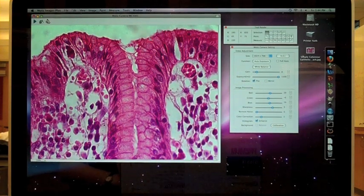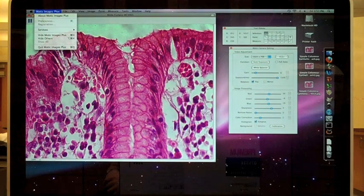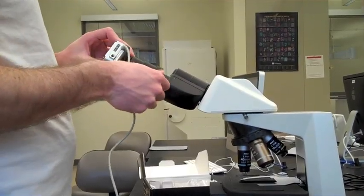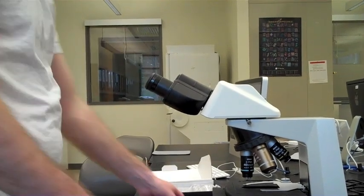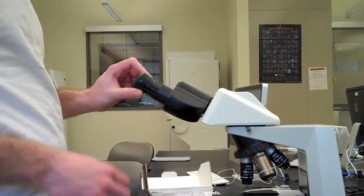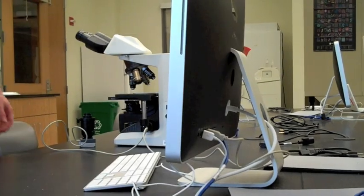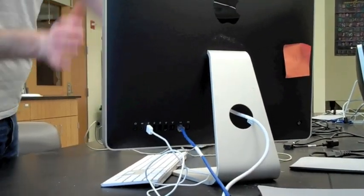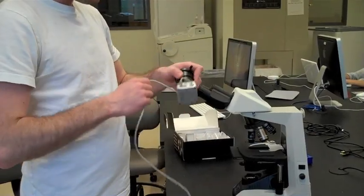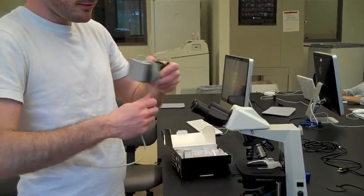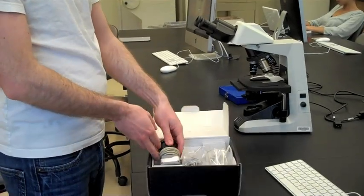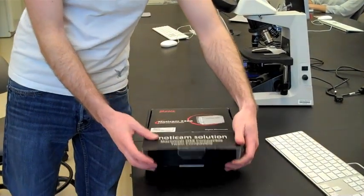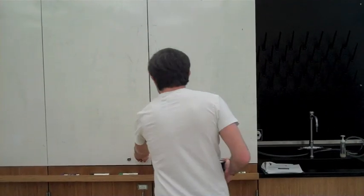Your image is now saved so you can quit out of the Modic Images Plus software. Unscrew the Modic camera from the microscope and replace the ocular lens. Remove the USB cable from the back of the computer. Wrap the camera in its USB cable and place it in the box. Close the box. Put the box back in the cabinet.